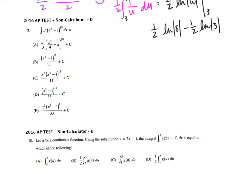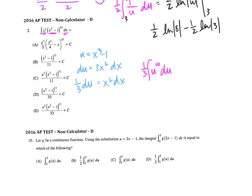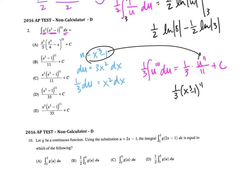On this next one, I'm going to make my u equal to x cubed minus 1. The derivative of u will be 3x squared dx. I do not need 3x squared dx, but I do need x squared dx, so I divide out that 3. I'll replace x squared dx with 1/3 du, and rewrite x cubed minus 1 as u to the 10th. Taking the antiderivative: the constant stays out front, u to the 10th becomes u to the 11th over 11 plus a constant. Substituting back: 1/3 times x cubed minus 1 to the 11th over 11, giving 1/33 times x cubed minus 1 to the 11th plus c. That's answer d.